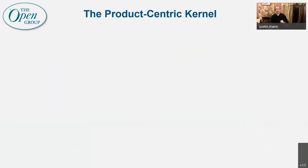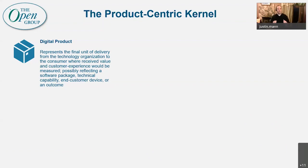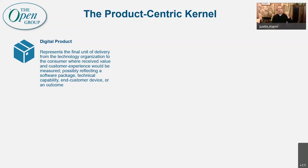How we accomplish that in the kernel is to think about how we define the digital product — it's the final unit of delivery from the technology team to the consumer. We've taken a slightly broader definition to encompass everything from a software package to a technical capability, an in-customer device like a laptop or tablet, or even an outcome that's delivered. The goal is to use digital product as a unifying concept to get everyone on the same page about what we deliver and how we create value through those things — not get into terminology wars.